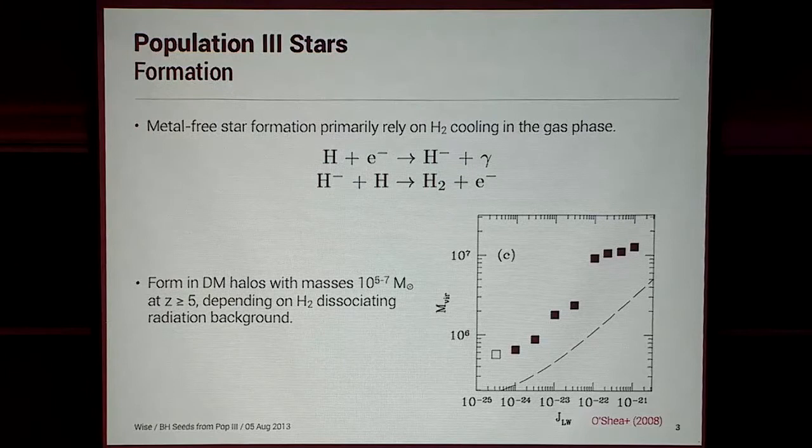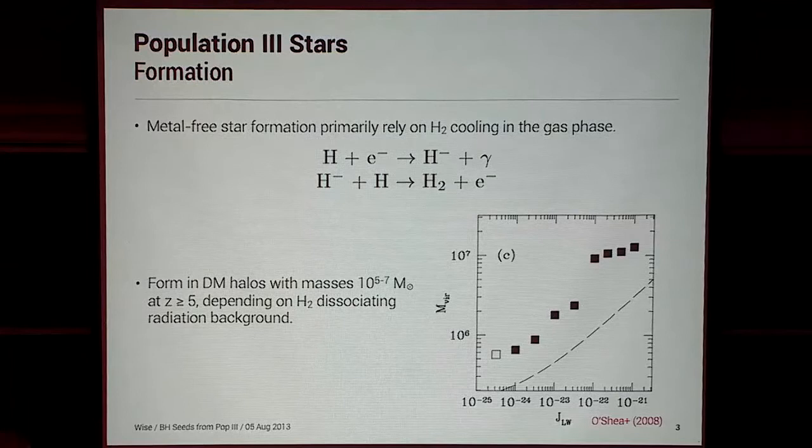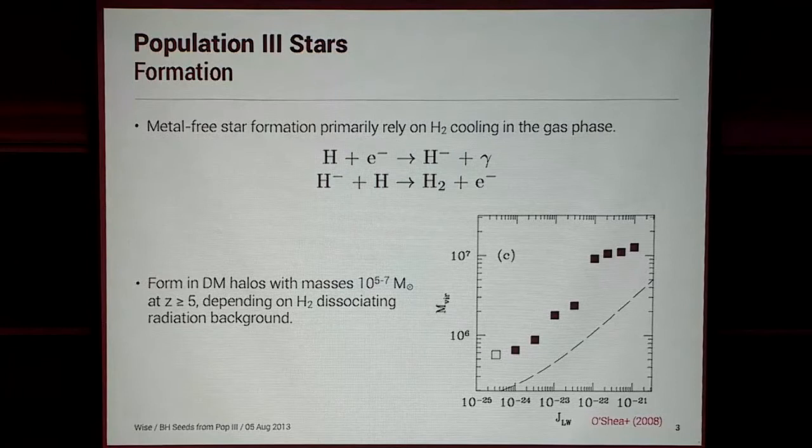H2 is a very delicate molecule where it can be dissociated by Lyman-Werner radiation, which is optically thin. You can have a UV background that can dissociate H2, and this actually regulates where these first stars form — how big does the halo have to actually be given some UV background?